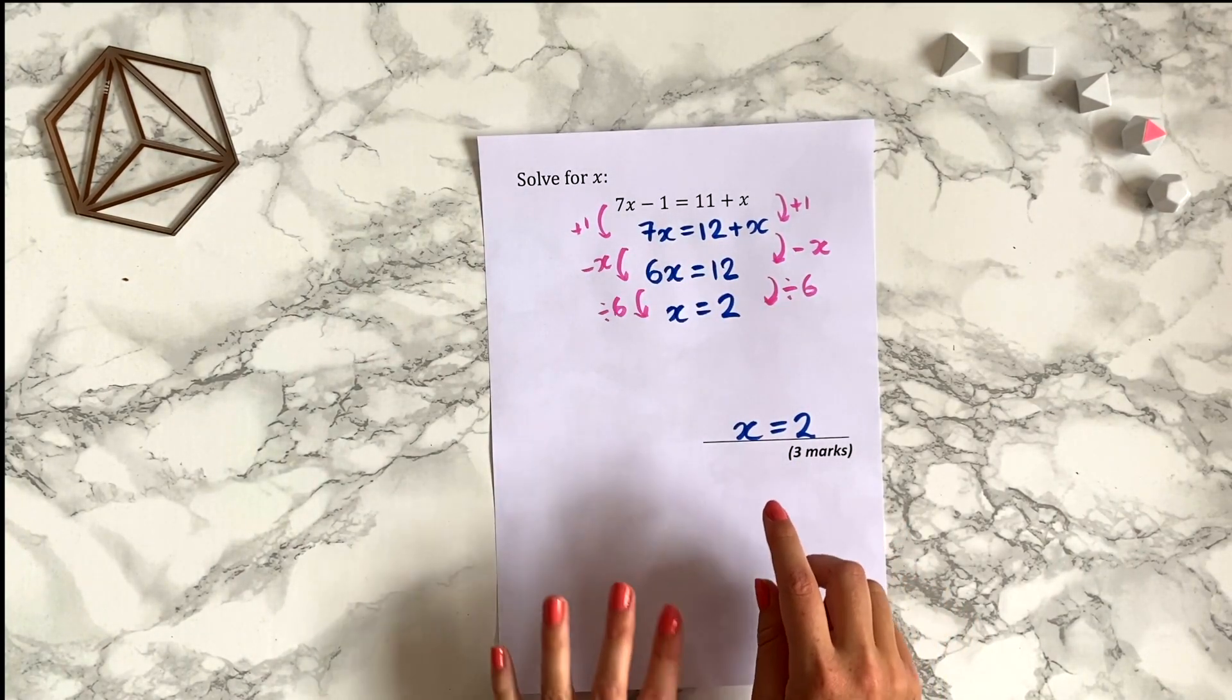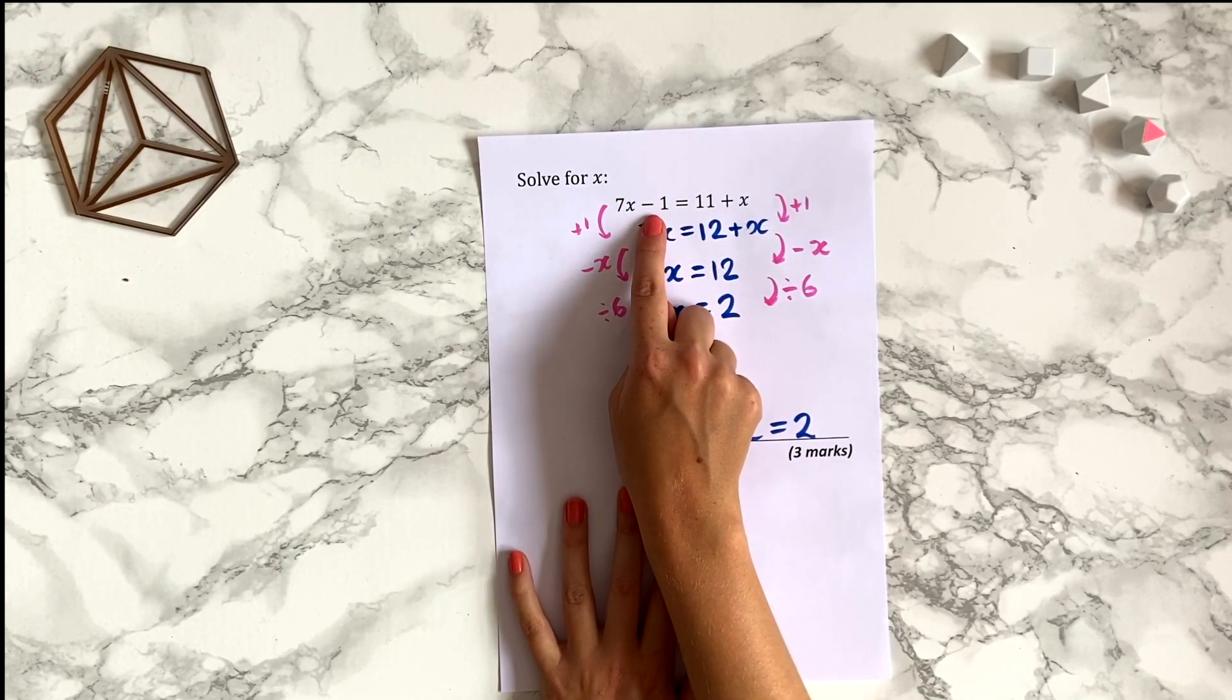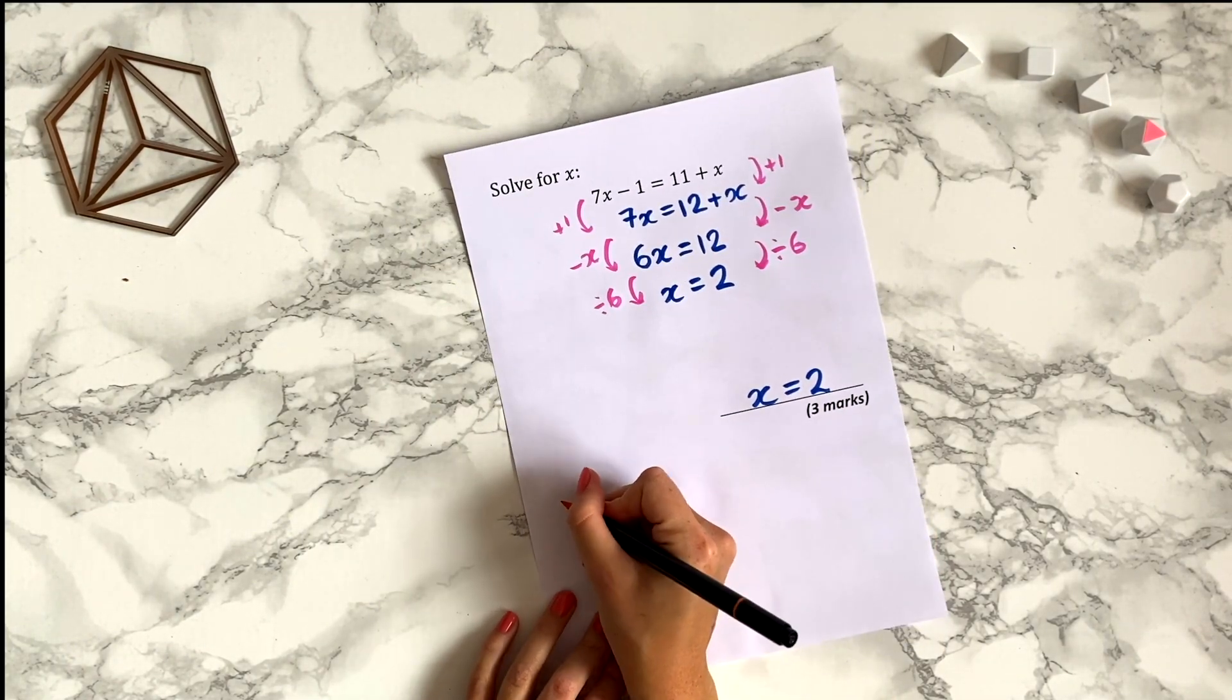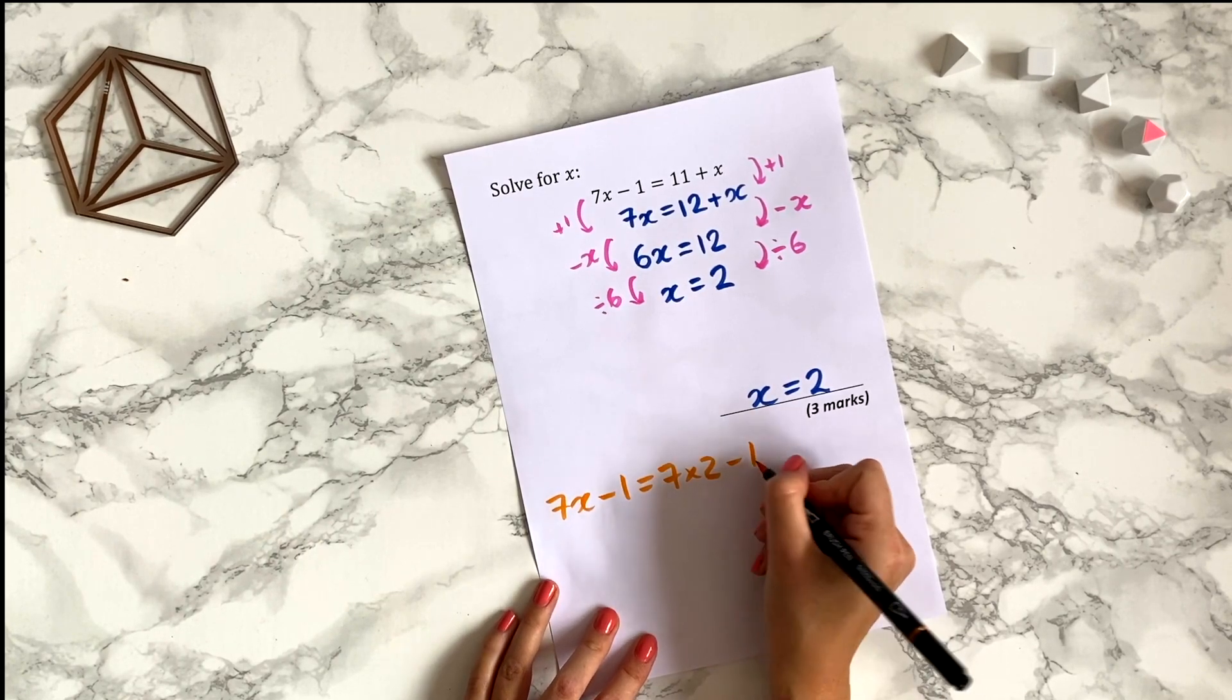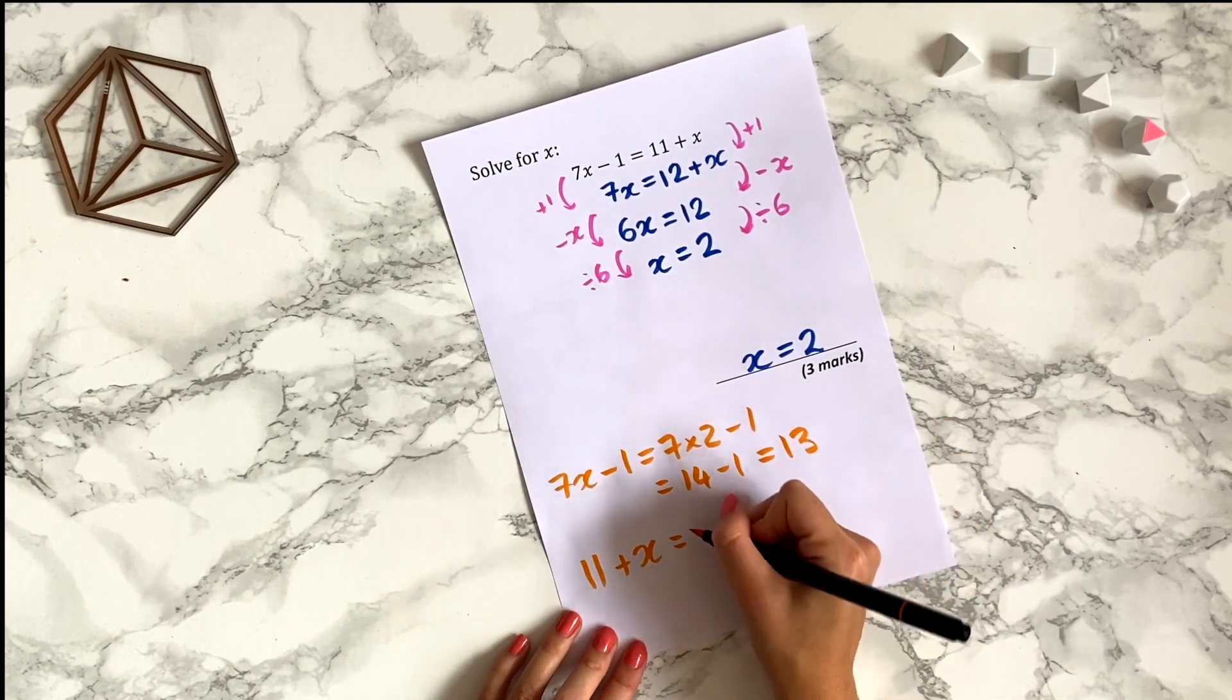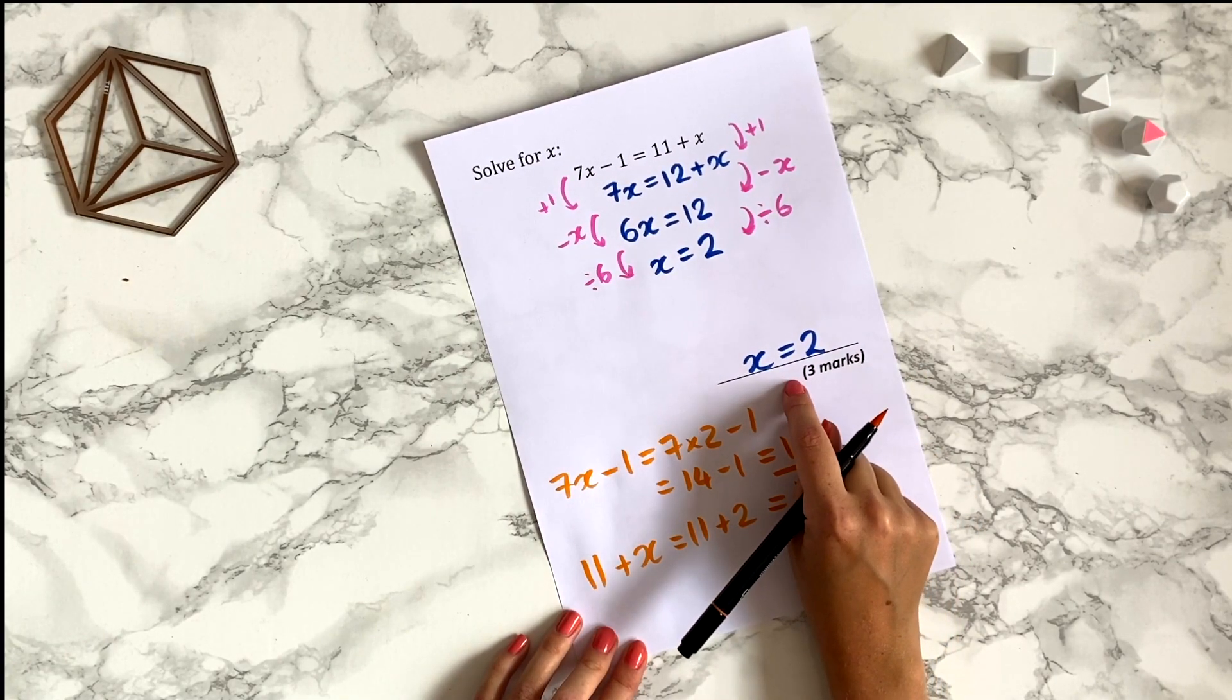Now what we've done by solving this equation is we've found the values of x for which this equation makes sense. So if we substitute the value of x that we got as our answer into this equation, we should find that the left hand side equals the right hand side. So our left hand side is 7x minus 1 and with x equals 2 let's substitute that in 7x minus 1 and this equals 7 times 2 with our x value minus 1 which is 14 minus 1 which is 13 and on the right hand side we have 11 plus x and with our x value that's 11 plus 2 which is also 13. So the left hand side and the right hand side agree. So we can be 100% sure that we've found the correct solution to this equation.